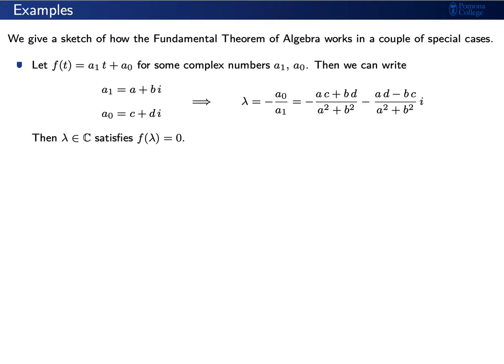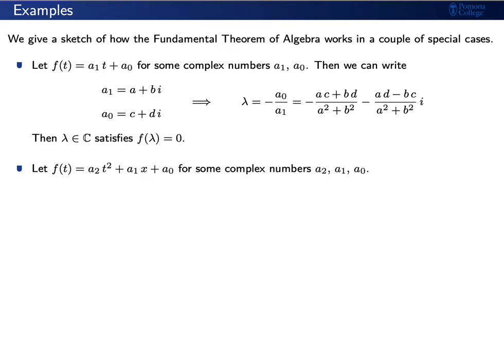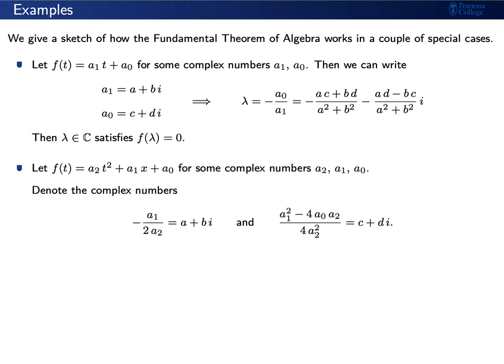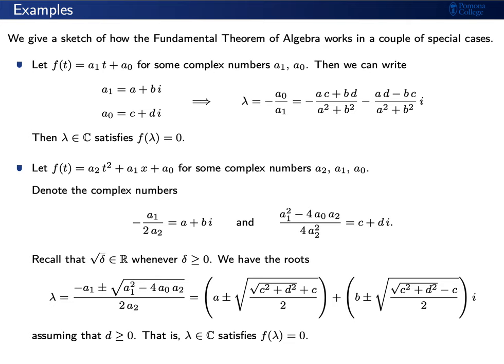For a polynomial of degree 2, we write f of t as a2 t squared plus a1 t plus a0 for complex numbers a2, a1, and a0. Letting negative a1 over twice a2 be a complex number a plus bi, and the discriminant be c plus di, we can express the root via the quadratic formula in terms of a, b, c, and d. Though the formula is complicated, the key point is that we can always express the root of a quadratic with complex coefficients as a complex number.